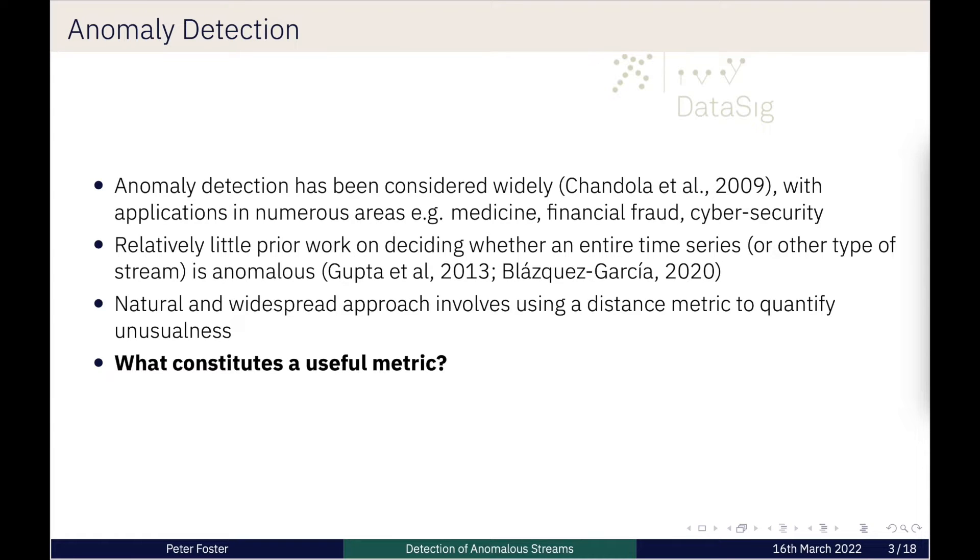So how do we go about this? In anomaly detection in general, one approach involves using some notion of distance metrics. This is a common approach. We want to decide if our given object is proximate to the existing objects which we consider normal. So then we need to ask the question, what is a useful metric? This is one of the questions that we aim to address with our work.